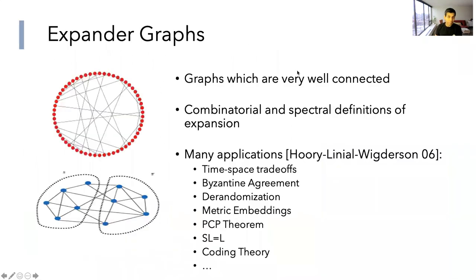Before we get to high dimensional expanders, let's recall expander graphs — objects we all know and love. These are graphs which are well connected; there are combinatorial and spectral ways of measuring this notion of expansion. They have a plethora of applications, including de-randomization, metric embeddings, pseudo-randomness, and coding theory. There is an excellent survey by Mahuri, Lineal, and Biggerson covering many of these constructions and applications.